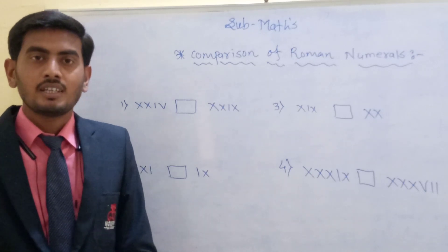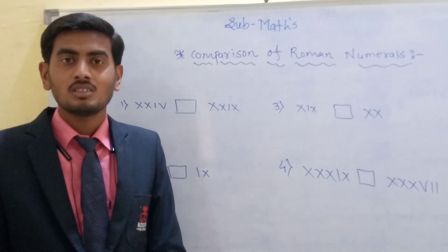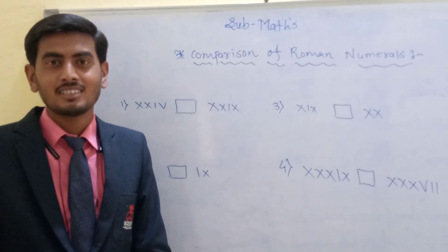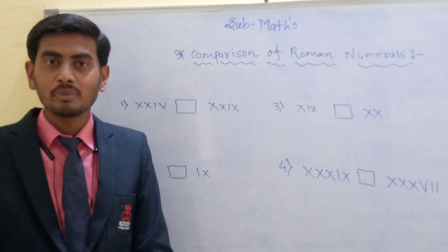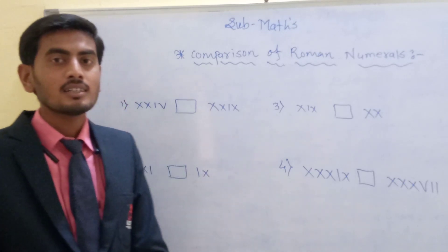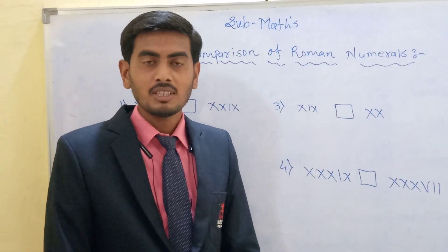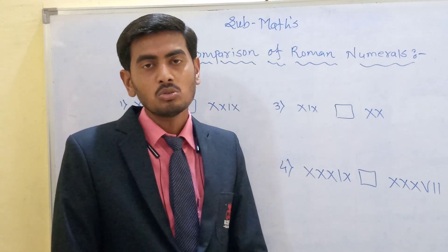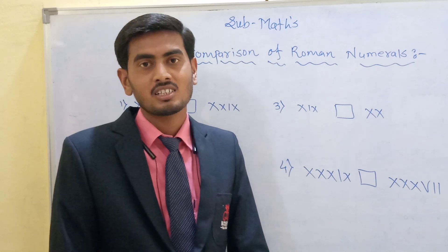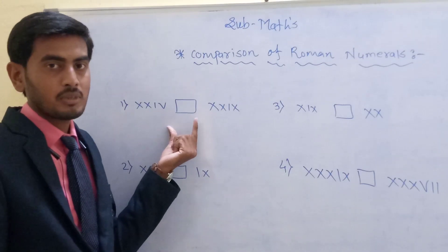Hello everyone. In the last 3 to 4 classes, we had to learn about the Roman numbers. Hope you all understand the Roman numbers and how to build and how to read the Roman numbers. Now, in this class, we learn about the comparison of Roman numerals — comparing two Roman numbers to find which one is greater and which one is smaller. Let us see the first example of the comparison of Roman numbers.